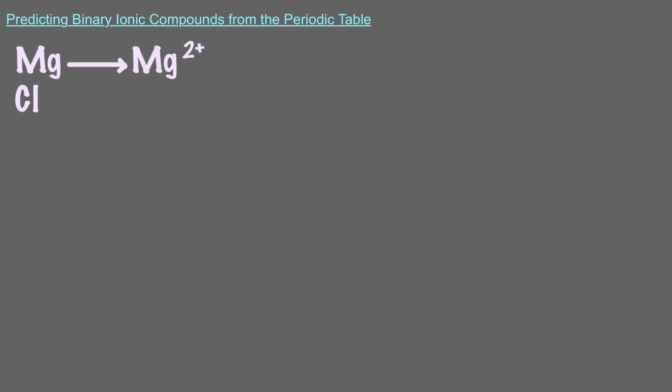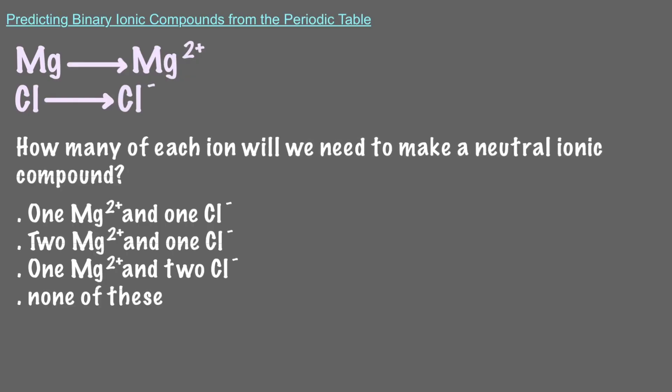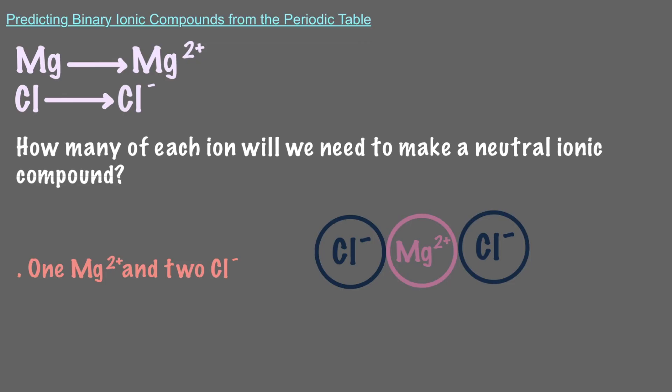Let's explore an example. Suppose we want to predict the ionic compound made from magnesium and chlorine. Magnesium belongs to group 2 of the periodic table, which means it always makes a cation with a positive 2 charge. Chlorine belongs to group 17, so it makes an anion with a negative 1 charge. We need two chloride ions, each with a negative 1 charge, to balance out the positive 2 charge of the magnesium. Therefore, our ionic compound would have 1 magnesium and 2 chlorines — magnesium chloride.